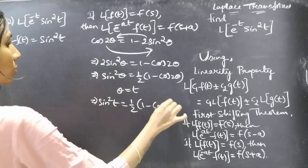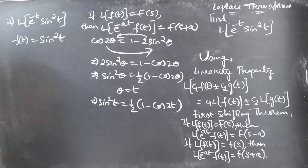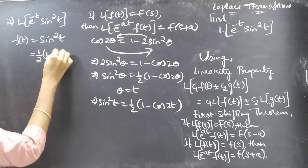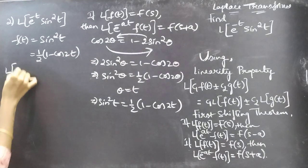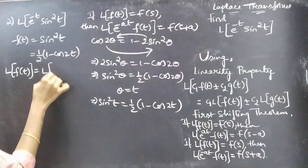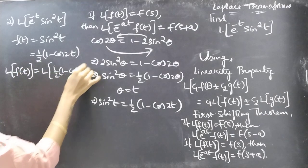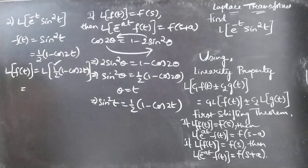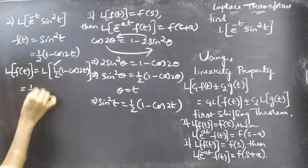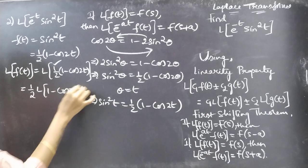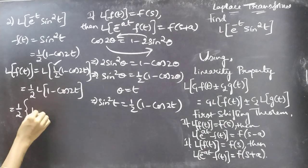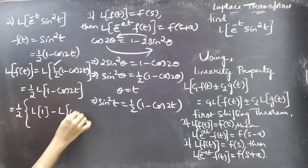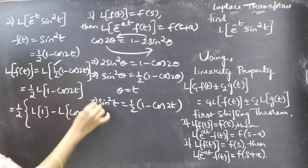So sine squared t equals 1 by 2 into 1 minus cos 2t. Let's now find L of f(t). L of f(t) equals L of 1 by 2 into 1 minus cos 2t. Since 1 by 2 is a constant, apply the linearity property to get 1 by 2 into L of 1 minus L of cos 2t.